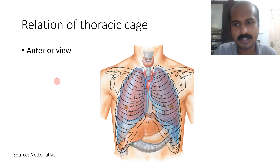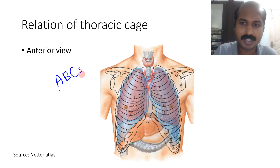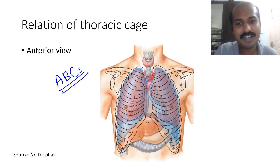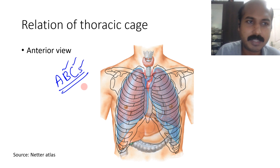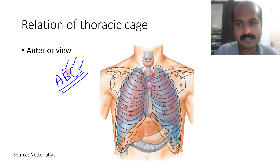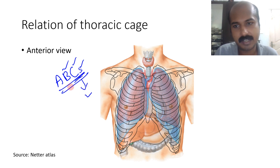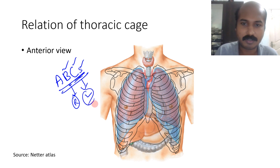A useful mnemonic here: the arch of the aorta gives off the Brachiocephalic, Common carotid, and Subclavian — ABC. This is an international mnemonic. Remember also that C and S are strictly to the left side, and the brachiocephalic is towards the right side. There is no mnemonic for that, but it must be remembered.